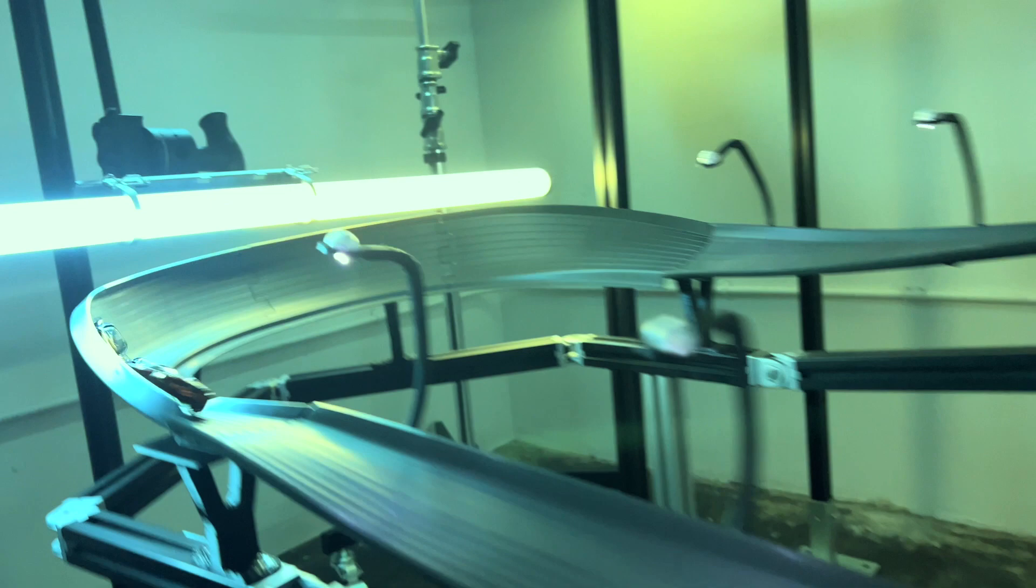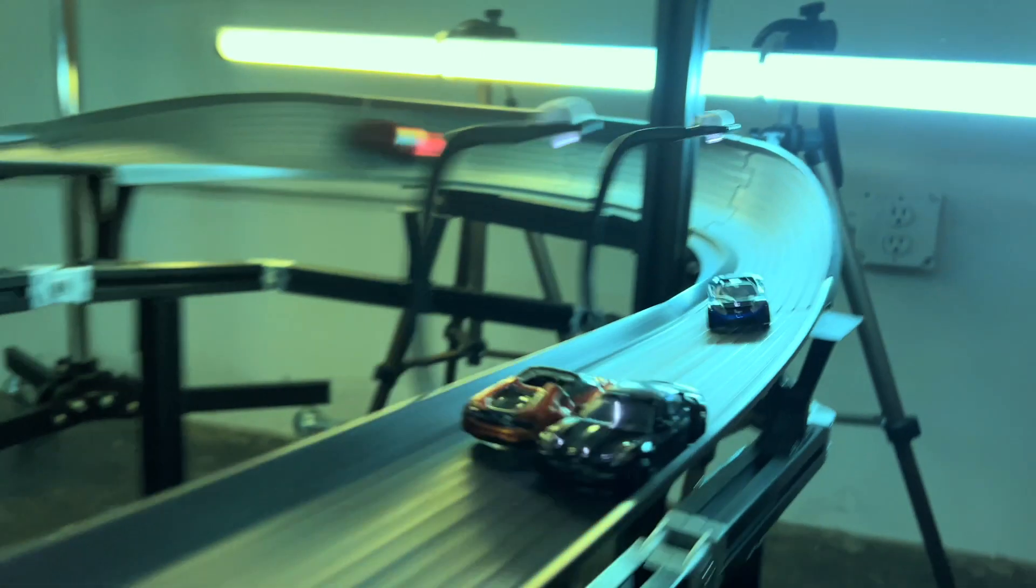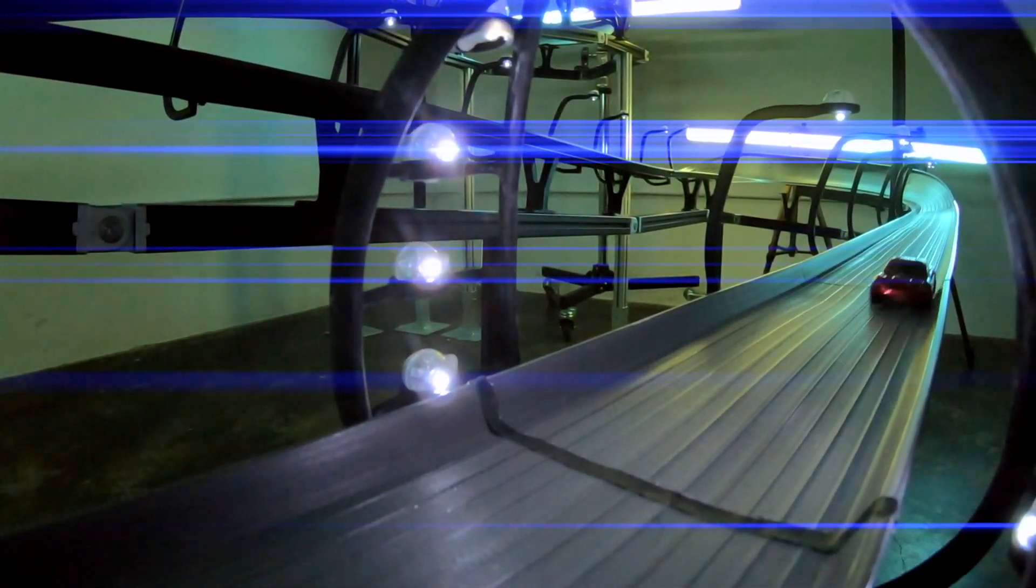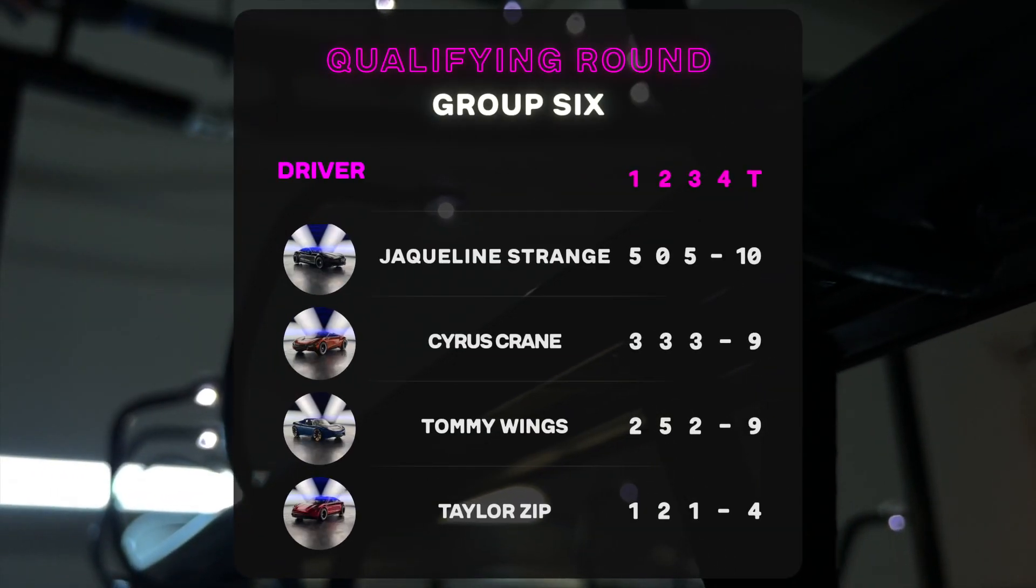So why does Crane decide that now is the best time to block? The block only becomes relevant into Turn 3 as Crane shuts down Tommy Wings from passing on the high outside while still keeping Strange at bay. But this flips him around. Tommy Wings accelerates aggressively straight into Crane, popping him in the hood. Incidentally, this provides Crane with enough speed to stay side-by-side with Strange. It's only now in the final straight that Strange can smoothly pull ahead, taking Race 3.